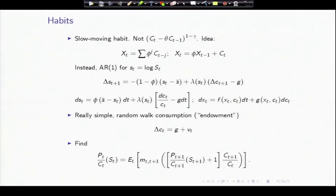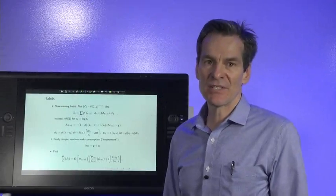We've described how habits adapt to past consumption. Now we've got to give you the endowment. We're going to use a very simple random walk endowment. And then consumption equals the endowment. That's the model.